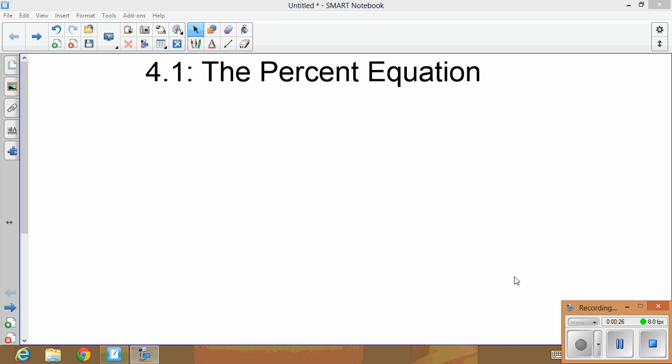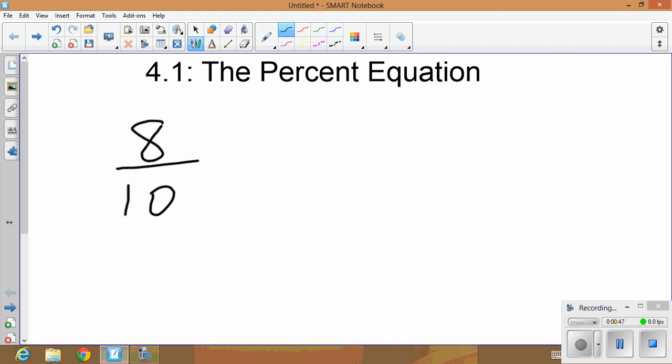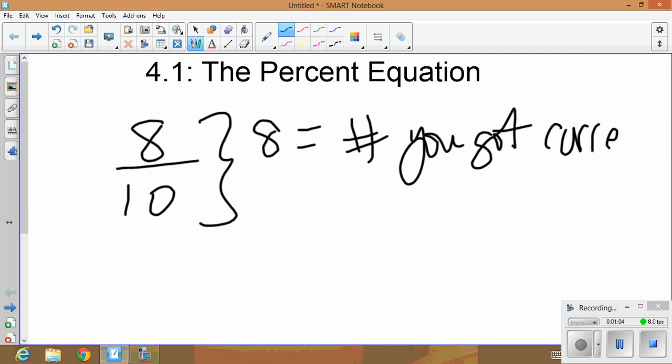I'm just going to go through the equation and a few examples, and when we get to class we will continue to use the percent equation and practice some more. So here we go. The formula, I will show you that in just a minute. I want to show you this example. Say you took a test and I wrote 8 out of 10. What do these numbers represent? Well, the 8 is equal to, or it represents, the number that you got correct.